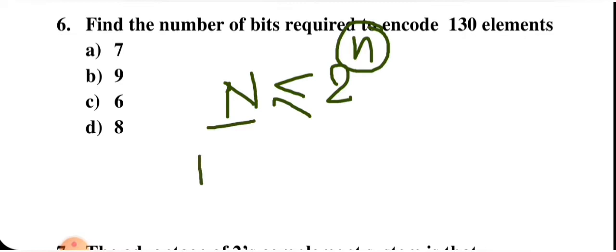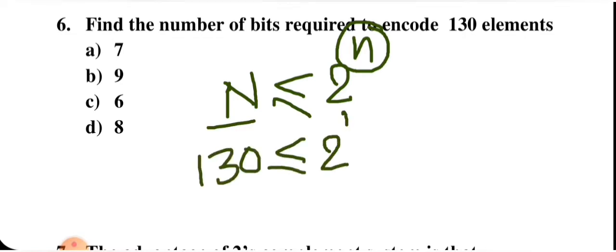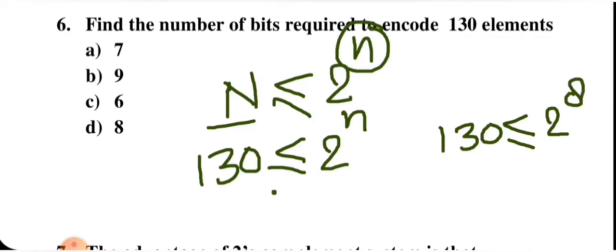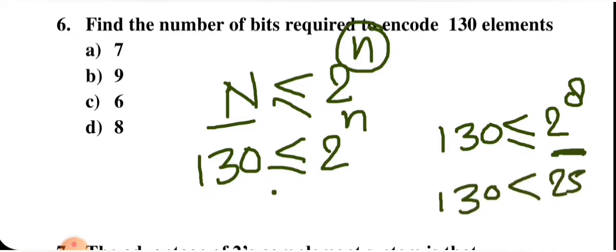N is 130, so 130 ≤ 2^n. If we put n = 8, then 2^8 = 256, and 130 is less than 256, so minimum 8 bits are required. If we take n = 7, then 2^7 = 128, which is less than 130 — not sufficient.